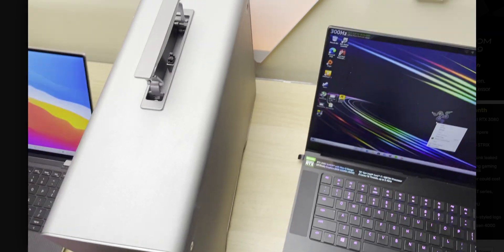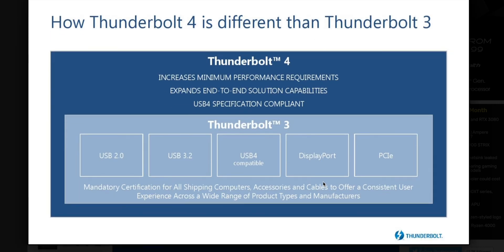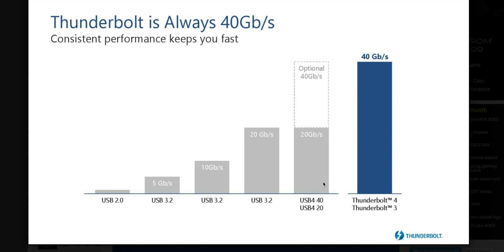The XPS 13 has done the right thing - one Thunderbolt on each side. If the Razer wanted to do that, they'd need two Thunderbolt 3 controllers. The only laptop that does that is the Mac, which has four Thunderbolt 3 ports and two discrete Thunderbolt 3 controllers, one on each side. I did test Ice Lake Thunderbolt 3 versus this Thunderbolt 4 on the XPS and found virtually no difference - margin of error.